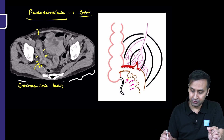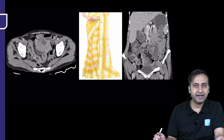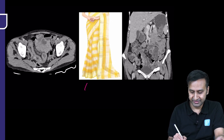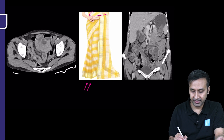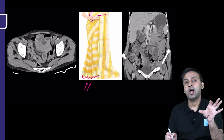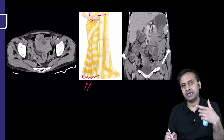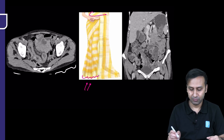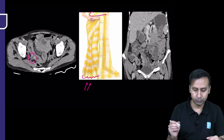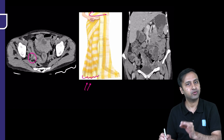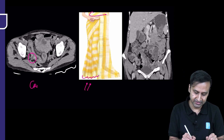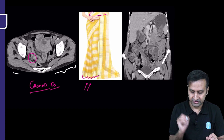If you find these pseudo-diverticula, you know you're dealing with Crohn's disease. Using the analogy of saree pleats: tying a saree around the waist creates pleats representing over-folding of material on the anti-mesenteric aspect of the bowel. Similarly, when you see this small outpouching — a pseudo-diverticulum — you can be sure you're dealing with Crohn's disease. This was a biopsy-proven case of Crohn's disease.